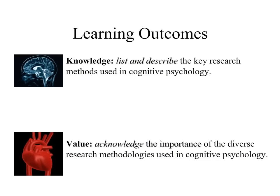The learning outcomes for this section of Module 1 involve the development of knowledge. We want you to be able to list and describe the types of research methods used in Cognitive Psychology, and to acknowledge the importance of the diverse research methods used in Cognitive Psychology.